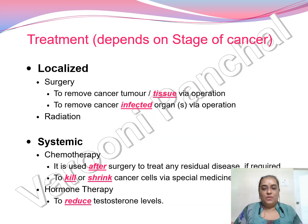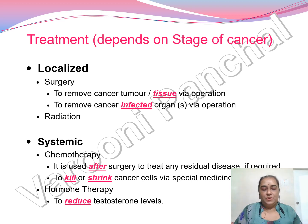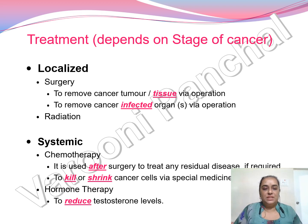As I said in an earlier video, treatment depends on the stage of cancer. In prostate cancer there are two treatments available commonly: localized and systematic. In localized, there are two types of treatments available — one is surgery and one is radiation or radiotherapy.